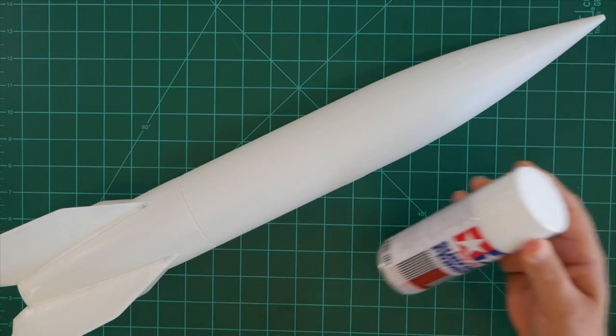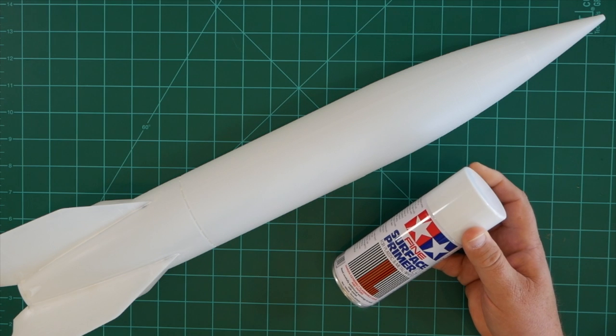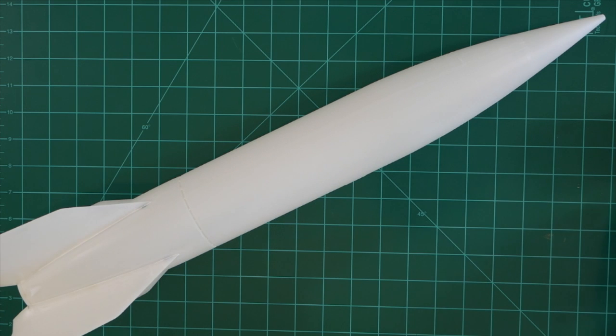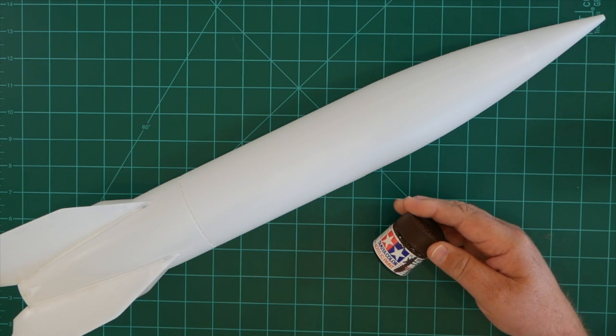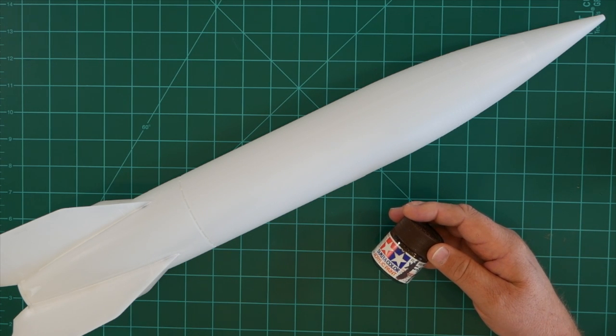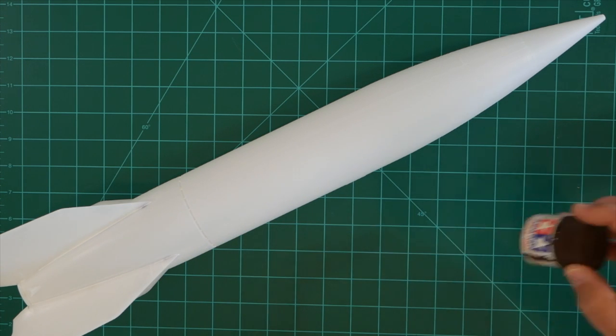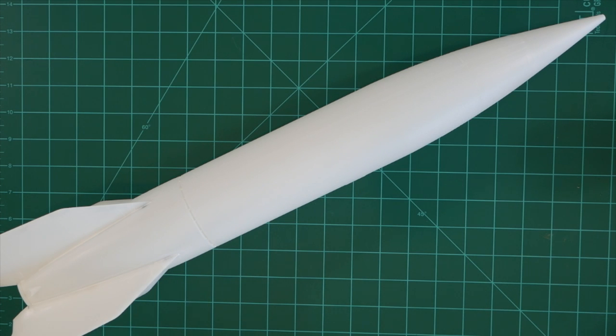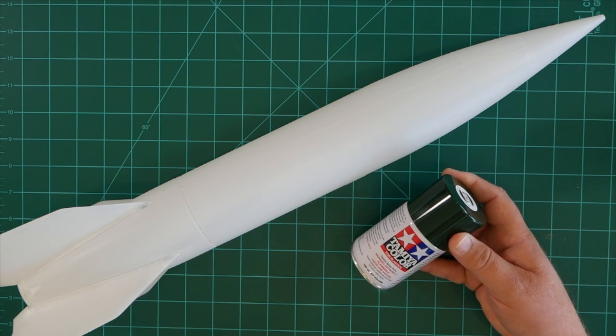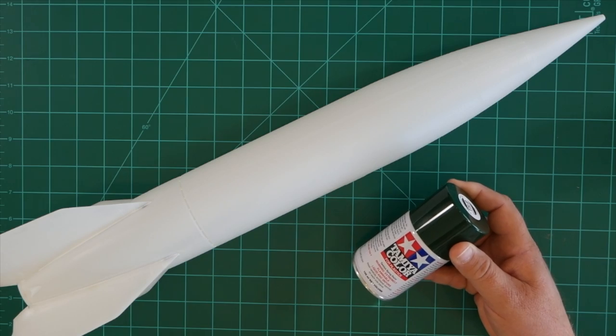With that done we'll prime the model with Tamiya fine surface primer then load the airbrush with flat brown acrylic paint to paint the interior surface of the rocket motor nozzle. Every V2 motor I've seen in a museum worldwide had a rusty brown appearance so this seems like a reasonable choice. After the acrylic has had some time to dry we'll mask the interior of the nozzle and then we'll paint the entire model with Tamiya British green spray lacquer. Much of this is going to take place off camera so let's get to work.